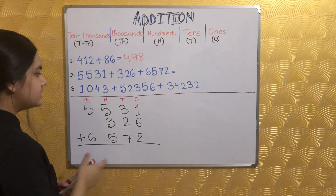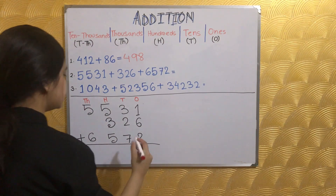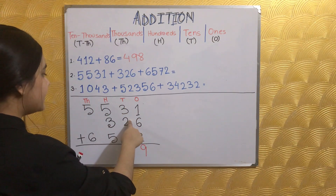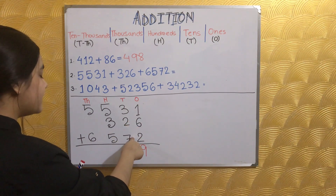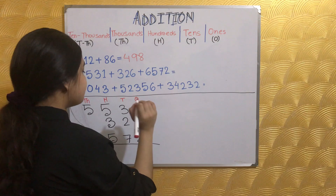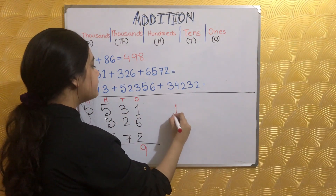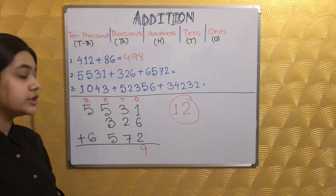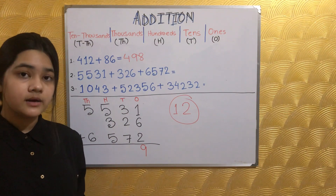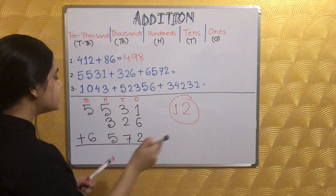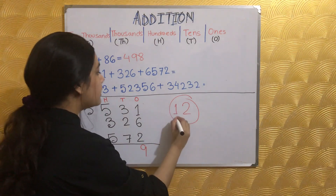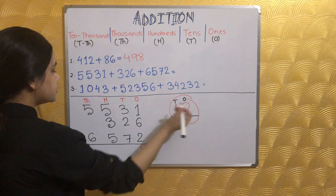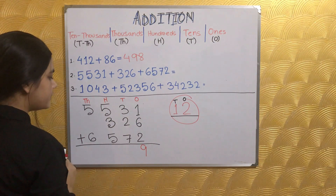Let's add: 6 plus 2 is 8, plus 1 is 9. Then 3 plus 2 is 5, plus 7 makes 12. Now it gets a little tricky — we have a two-digit number but we only have place for writing one digit. So we are going to carry the number which is in the tens place and write the number which is in the ones place. In 12, one is in the tens place and two is in the ones place, so we write two here.